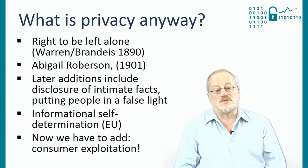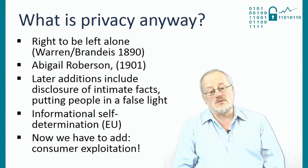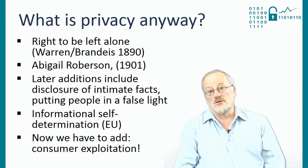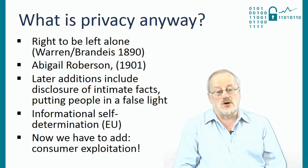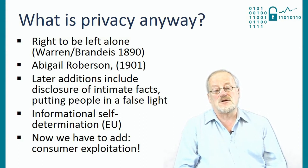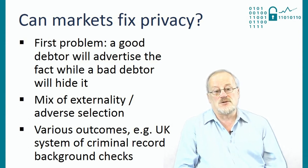Later additions included torts for the disclosure of intimate facts and for putting people in a false light. In the European Union, meanwhile, there was a movement to bring in data protection based on informational self-determination — the idea that you should know who had information about you and have the right to inspect it and correct it if it's wrong. But on top of this structure we had by the 1960s, we now have a further privacy concern: how do we prevent consumers being exploited by the monopolies that are arising everywhere and using information to discriminate?